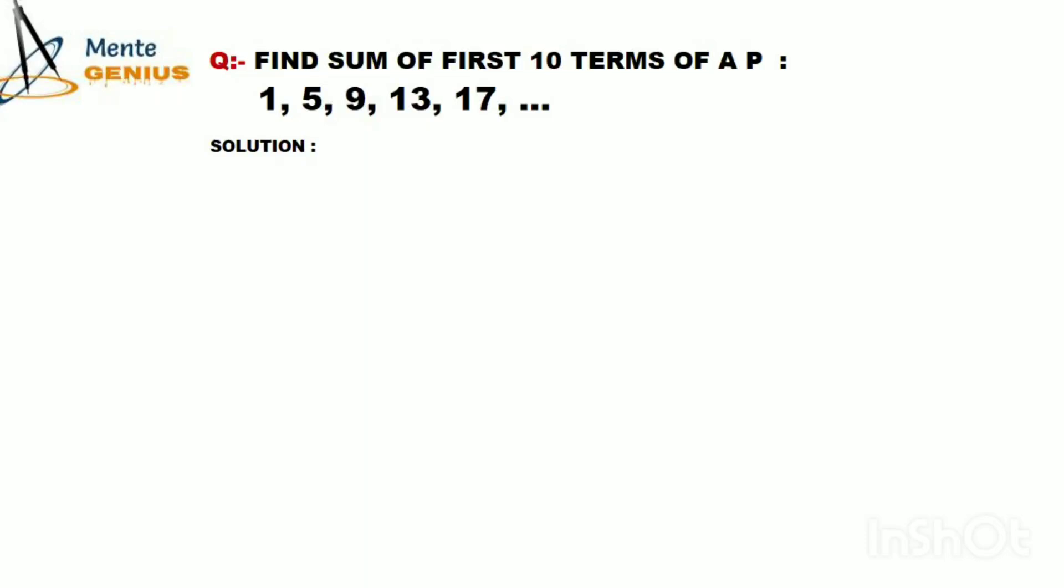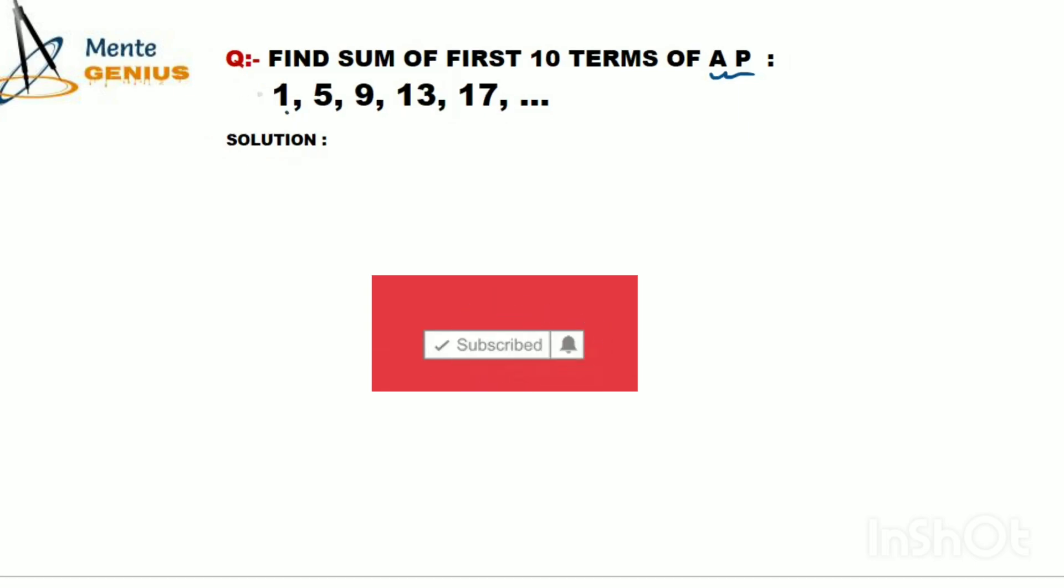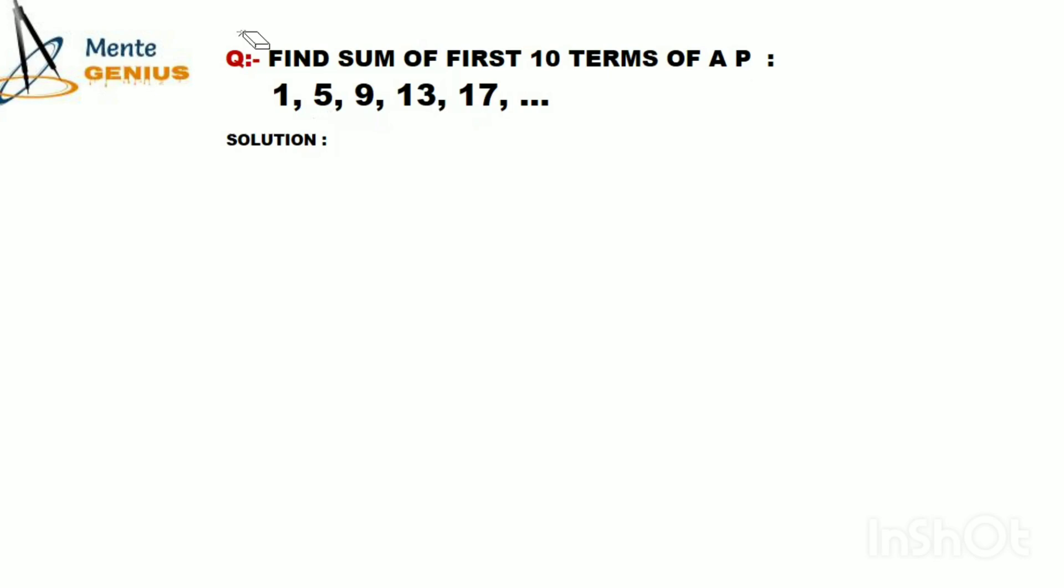Hello friends, welcome to Menti Genius. We are given an AP: 1, 5, 9, 13, 17... This AP is going on with a difference of 4. We are to follow one pattern in which every time we are adding 4.